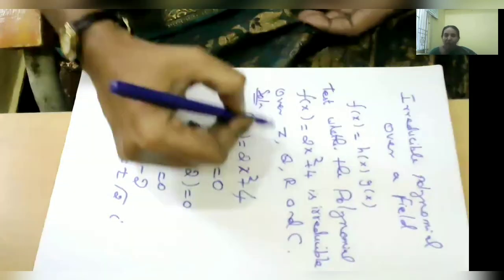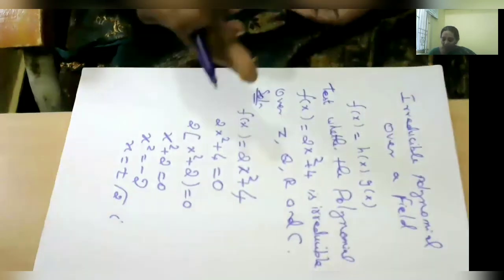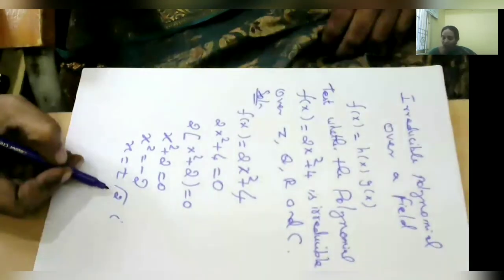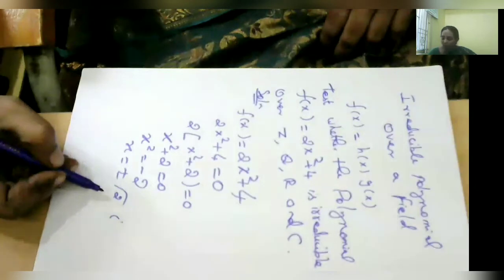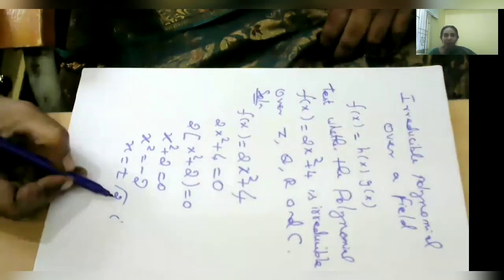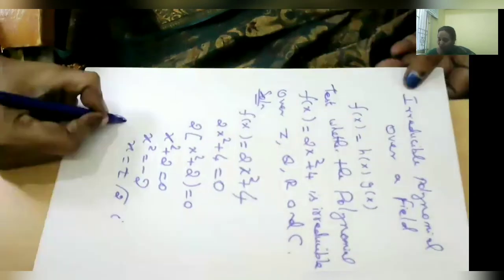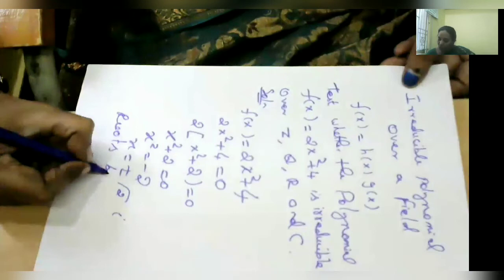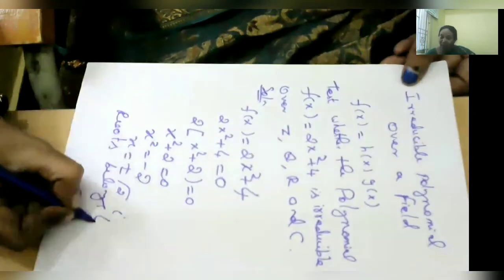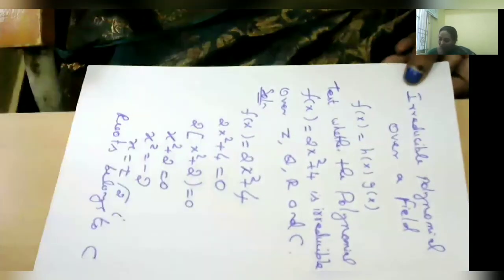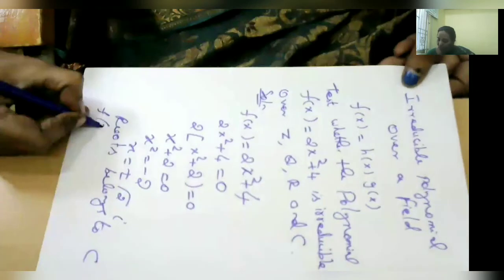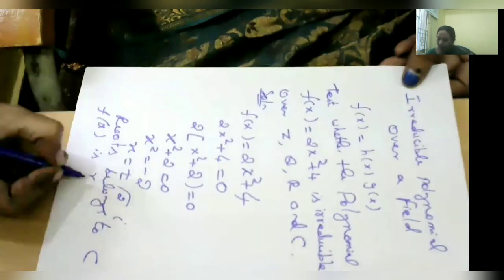So we have roots ±√2i. Now we check which set these roots belong to. Z is the set of all integers (negative numbers, 0, and positive numbers). Q is the set of rational numbers. The roots ±√2i do not belong to Z, and they do not belong to R either. Actually, these are complex numbers, so the roots belong to C.